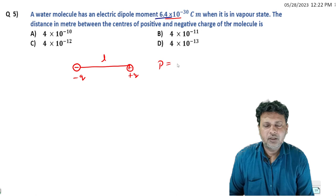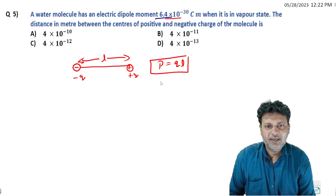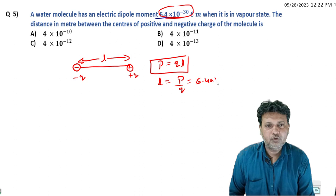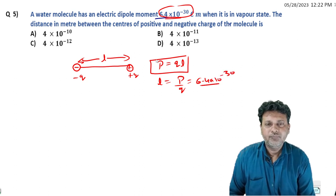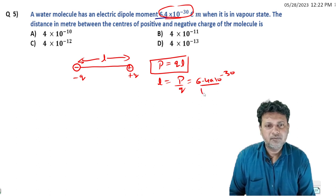So the dipole moment will be p equals qd, so distance d will be p divided by q. The dipole moment is 6.4×10^-30, and the charge of hydrogen, obviously an electron charge, so q value is 1.6×10^-19. This equals 6.4 divided by 1.6...